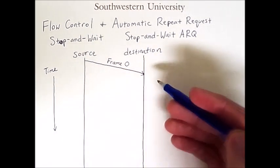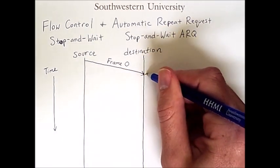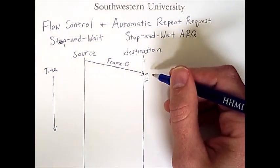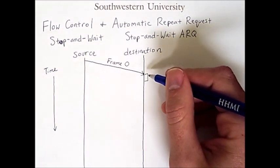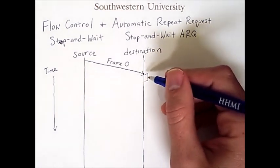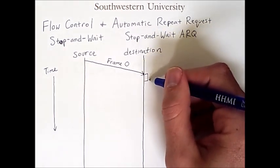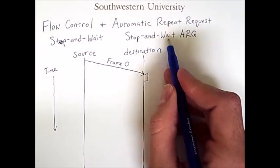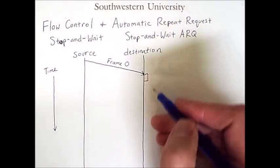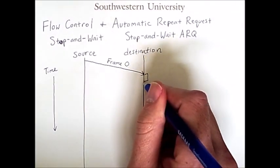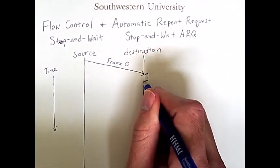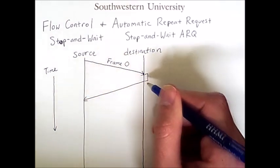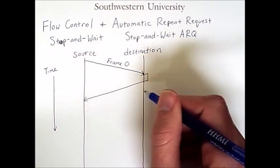Once the frame is received, some amount of time has to pass for the destination to process it, to realize that it has received it, and to notice that it's in the buffer. After that small amount of time has passed, according to the stop and wait ARQ, the destination will send what's called an acknowledgement. This frame of information goes back, and it also takes some time to arrive back at the source.